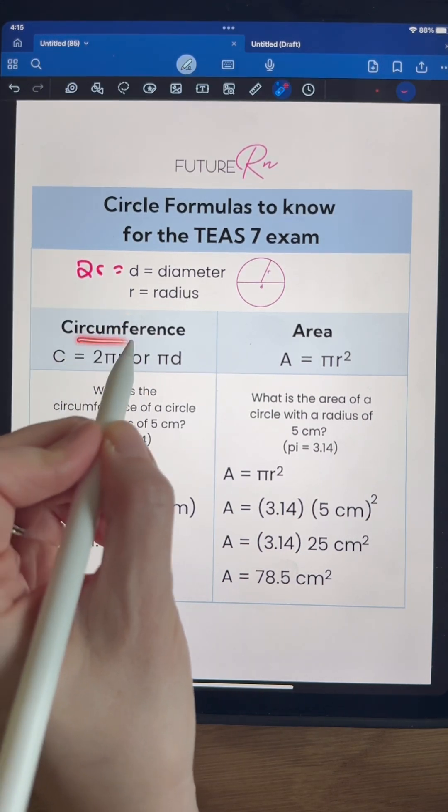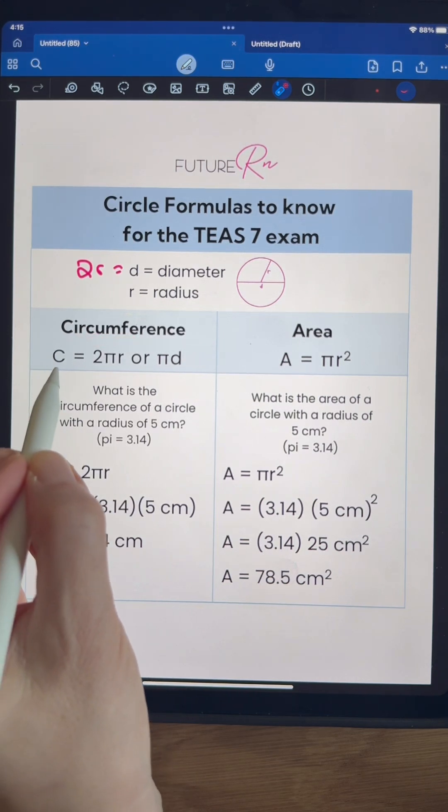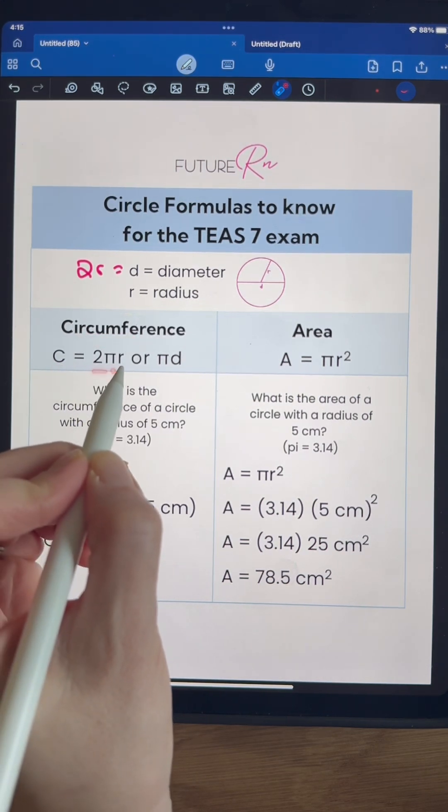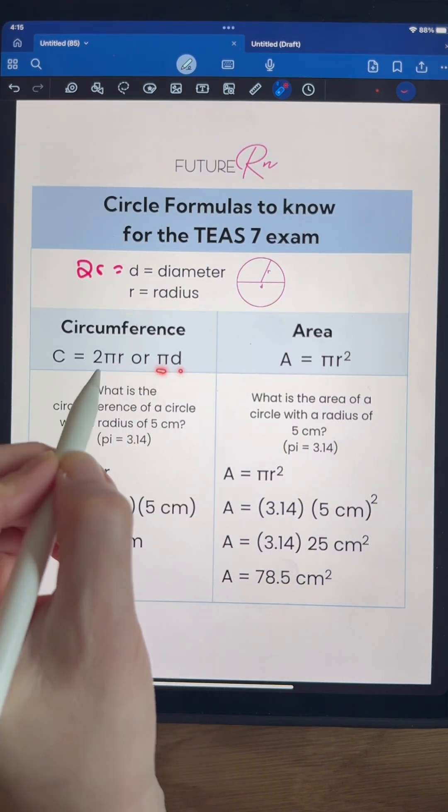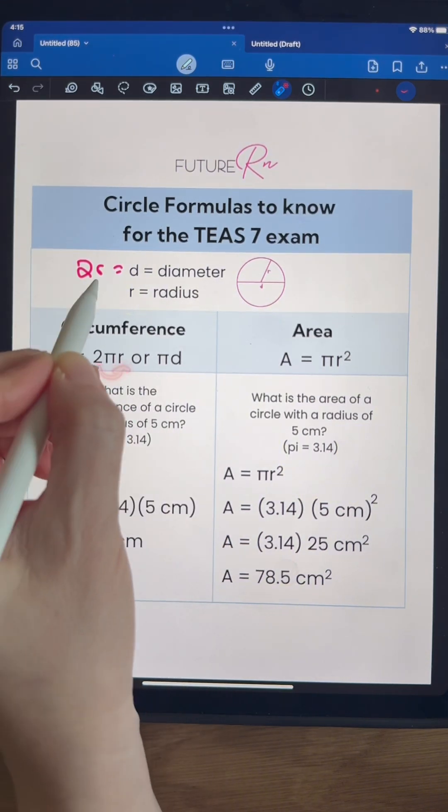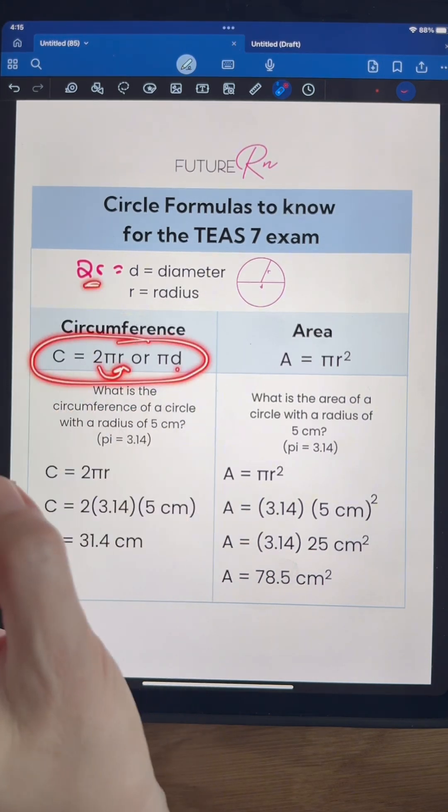Let's take a look at our first formula to know, which is circumference. So circumference equals 2 times pi times radius, or another way we could write that is pi times diameter, because remember 2 times R, right, is the same as diameter. So you can remember it either way.